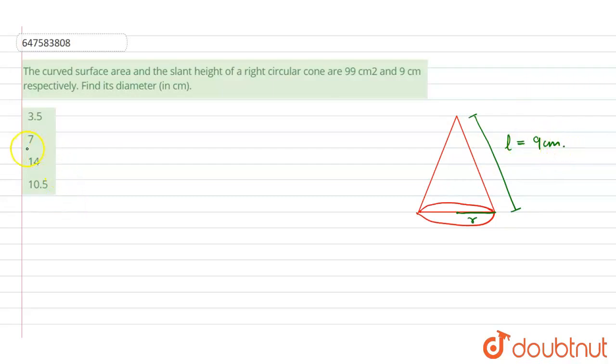So, what is the curved surface area? Curved surface area is equals to π R L. This is the formula to find the curved surface area of a cone.